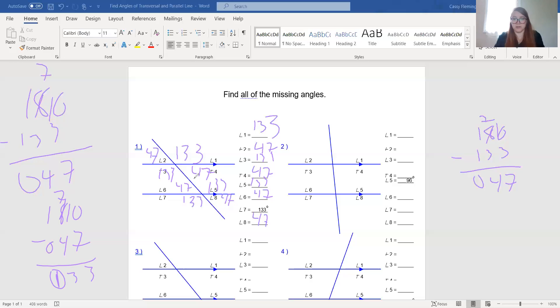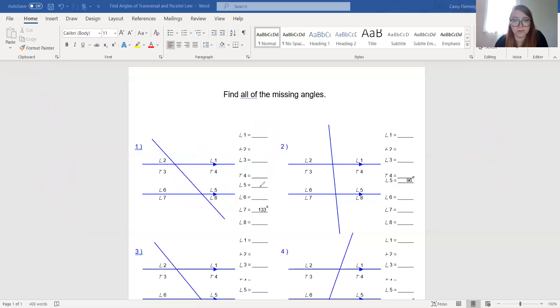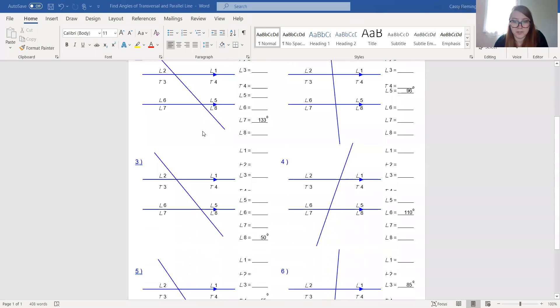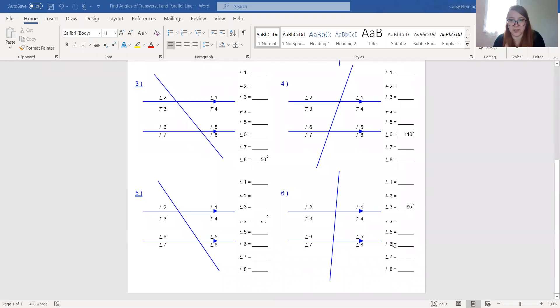You just have to find your missing angles. Shall we do one more? All right, let's do one more. Let's look at number 6. So it says the measure of angle 3 is 85. We know that alternate interior angles would make the measure of angle 5 also 85.